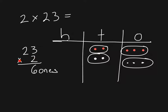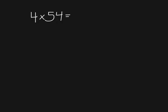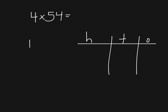For this next problem I have 4 times 54, which I can read as four equal groups of 54 equals that's my unknown. I'm going to start by drawing a place value chart with ones, tens, and hundreds, and I'm going to rewrite this multiplication problem vertically — so 54 times 4. I'm going to model my first factor, 54, in my place value chart, so that's five tens and four ones, and I'm multiplying this by four.